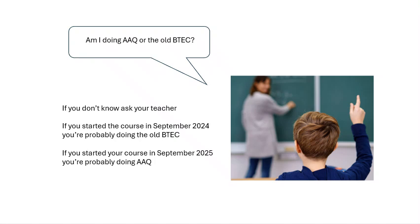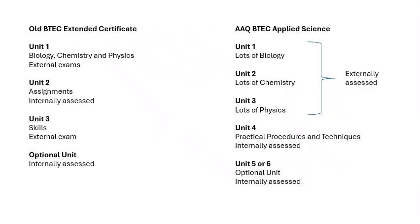In the old BTEC Extended Certificate, Unit 1 covered biology, chemistry, and physics with end-of-year hall exams. Unit 2 was internally assessed assignments graded pass, merit, or distinction with deadlines. Unit 3 was all about skills and was an external exam, and there was an optional unit that was internally assessed.